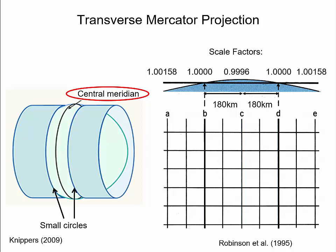More specifically, the two small circles appear as straight lines B and D, which are placed 180 km east and west of the central meridian of the UTM zone. These two lines, B and D, have a scale factor of 1. This means that a distance of 100 meters on the ellipsoid would be correctly read as 100 meters on the map. Line C represents the projected central meridian.